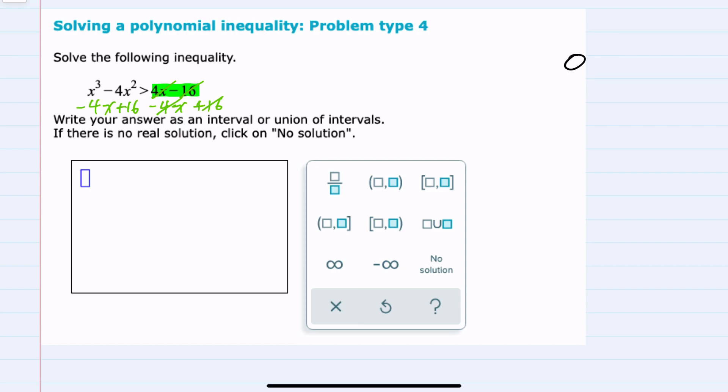And since I'm just adding and subtracting, the direction of my inequality would stay the same. On the left-hand side now, writing this in descending order, I have x to the third minus 4x squared minus 4x plus 16. So I now have my polynomial on the left-hand side, a 0 on the right-hand side.